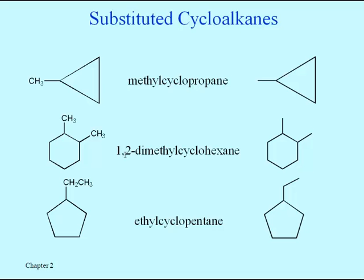Just as we sometimes have to use numbers to locate substituents along chains, we have to do that with rings too. With these two methyl groups hanging off of a cyclohexane ring, the one and two indicates that they are right next to each other. With a ring it doesn't matter where we start numbering, but we would start at a carbon that has a methyl group, so no matter which one I label as number one, the other is going to be number two. We still try to use the lowest numbers we can — sometimes numbering goes counterclockwise — but we always aim for the lowest possible numbers.